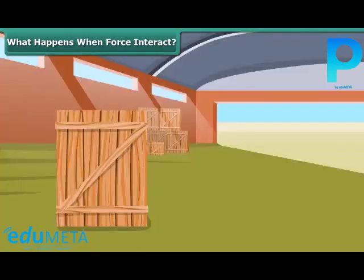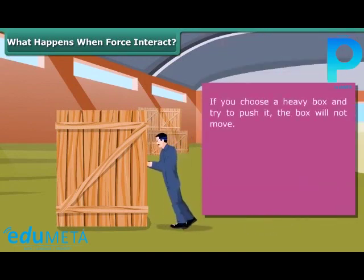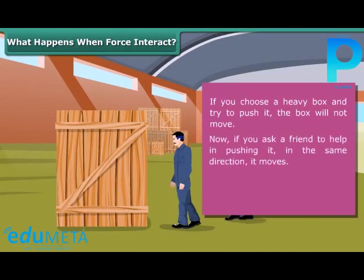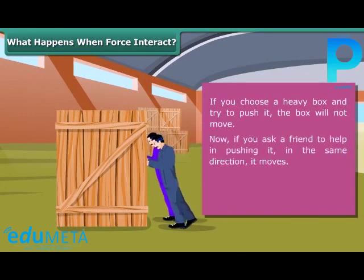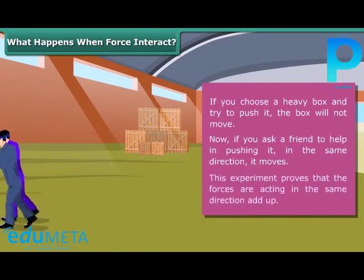What happens when forces interact? If you choose a heavy box and try to push it, the box will not move. Now if you ask a friend to help in pushing it in the same direction, it moves. This experiment proves that forces acting in the same direction add up.